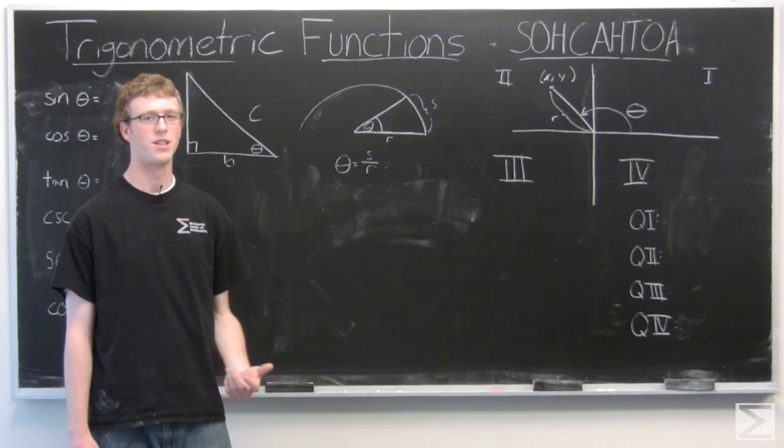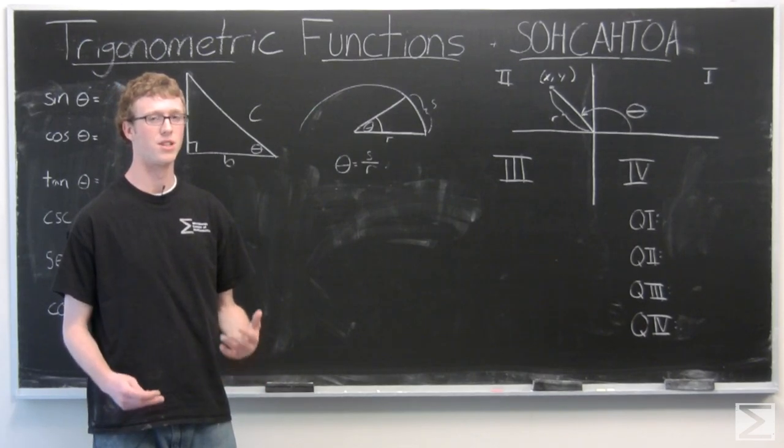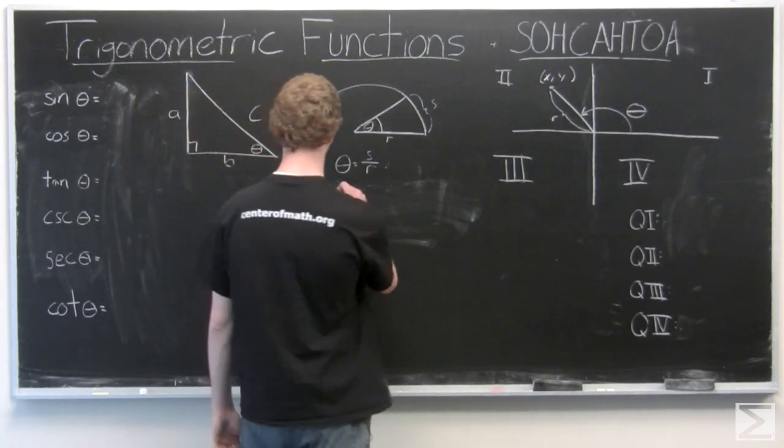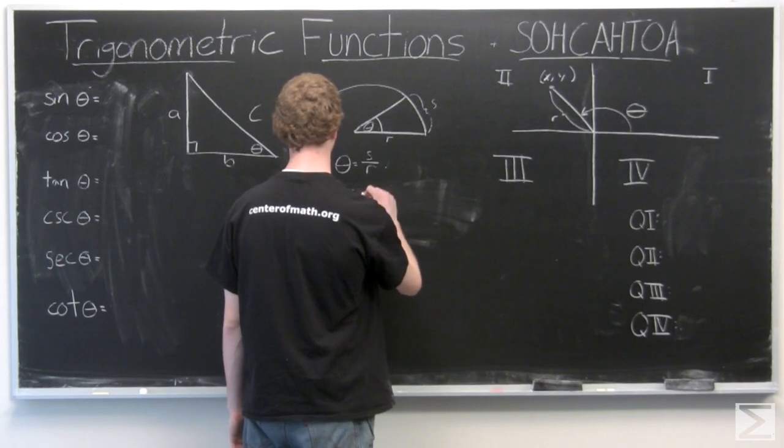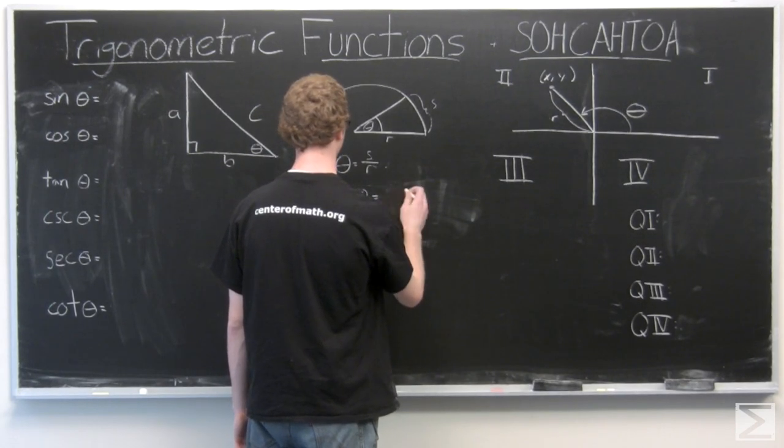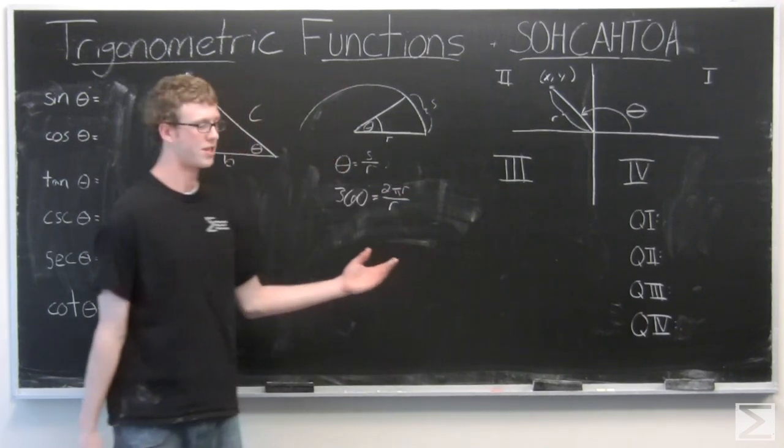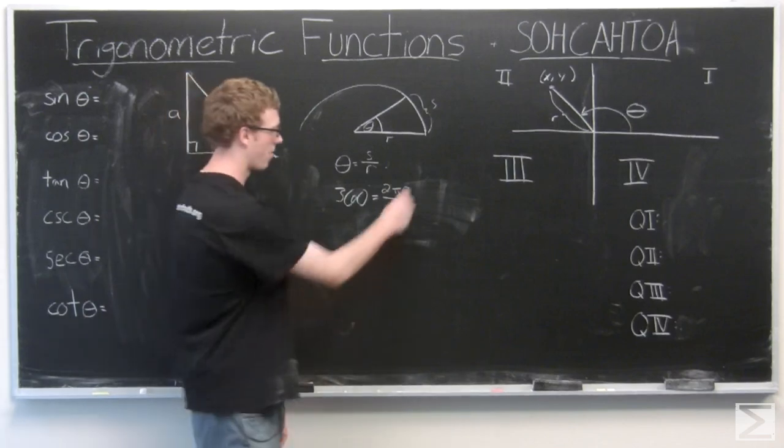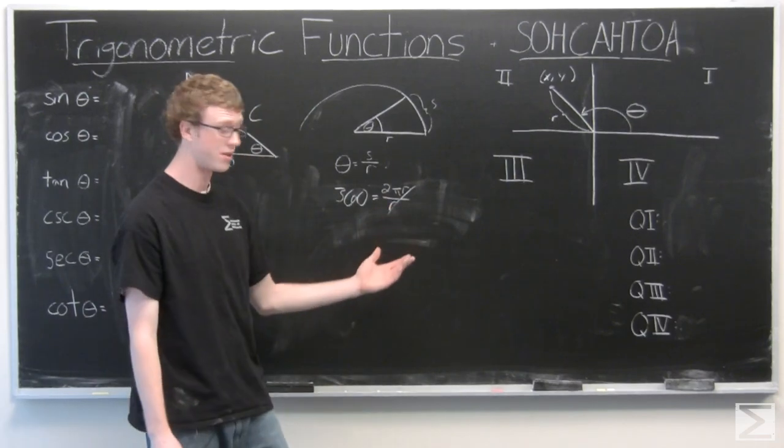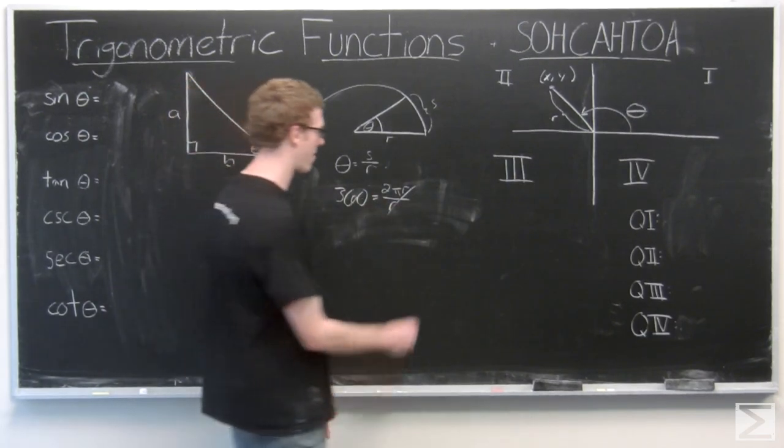So we can find out radians and degrees, how many degrees equals how many radians. So we have 360 degrees equals 2 pi r over r. We can just cancel the r's and we get 360 degrees equals 2 pi radians.